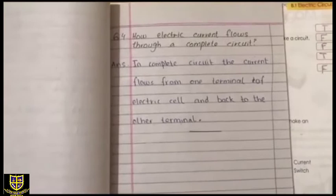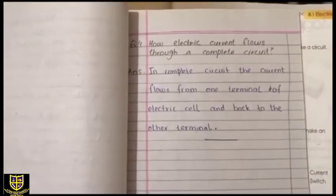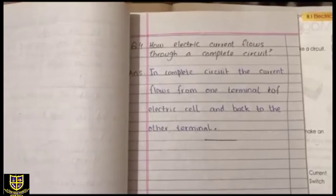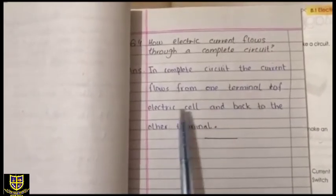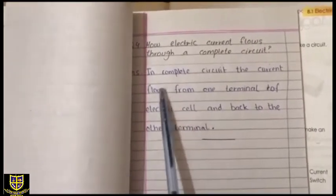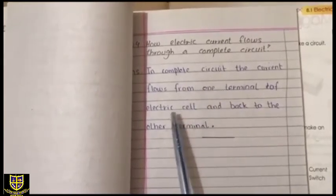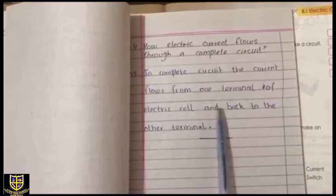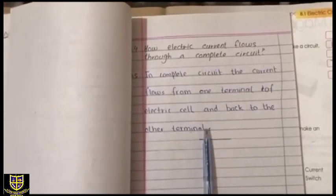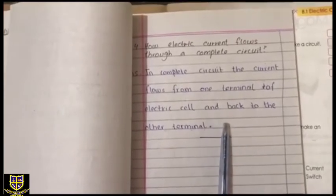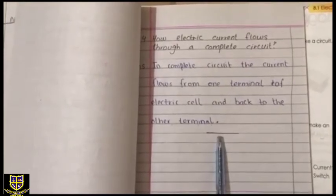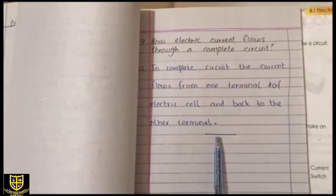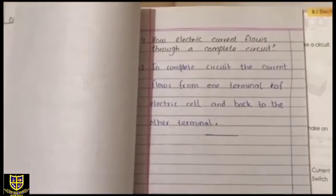Now question number four: how does electric current flow through a complete circuit? In a complete circuit, the current flows from one terminal of the electric cell and back to the other terminal. After writing this answer, you have to add an ending line after every question ends. So these were your four question answers.